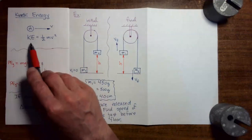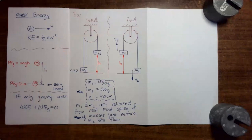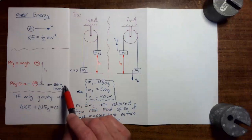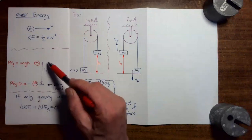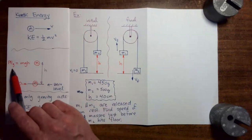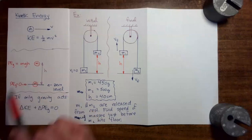The kinetic energy of an object is equal to one-half the mass of the object times the square of the speed. So far, the only form of potential energy I have introduced you to is gravitational potential energy. We start by introducing a zero level. An object at the zero level has a gravitational potential energy of zero. An object at a height h above the zero level has a gravitational potential energy equal to its mass times the freefall acceleration multiplied by the height of the object above the zero level.